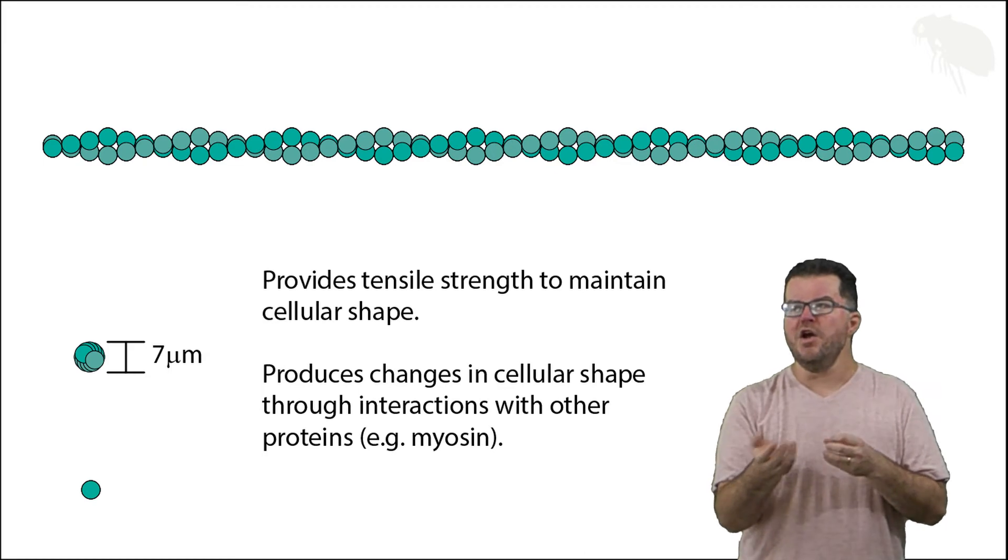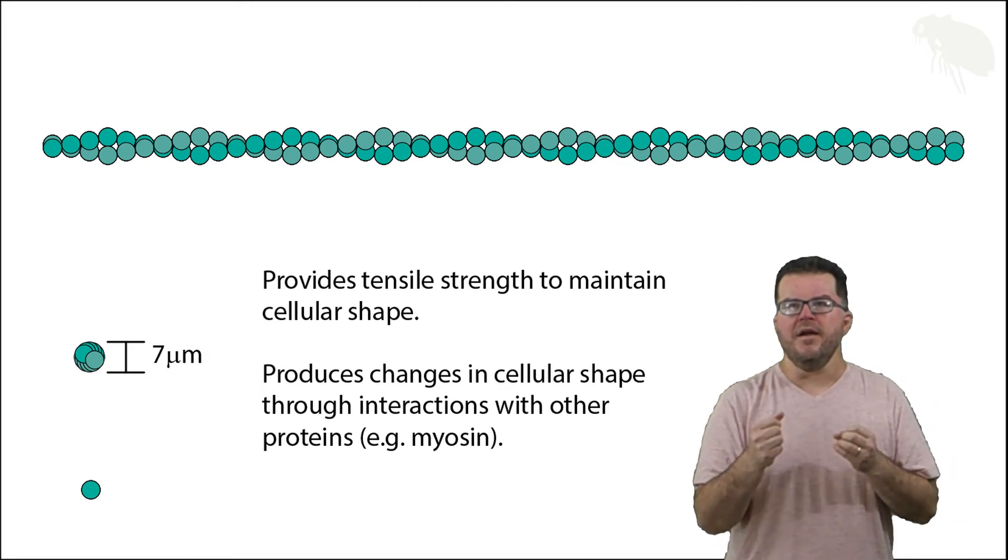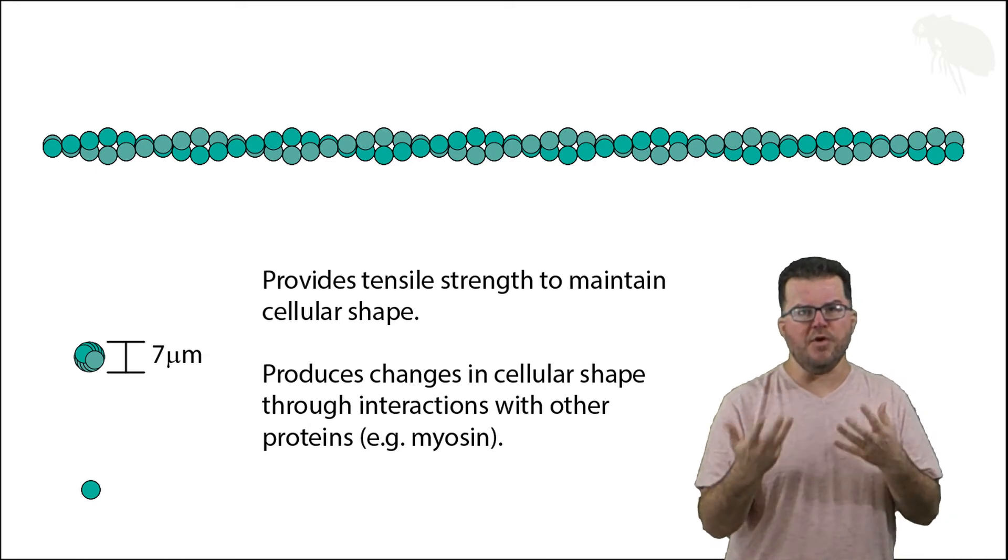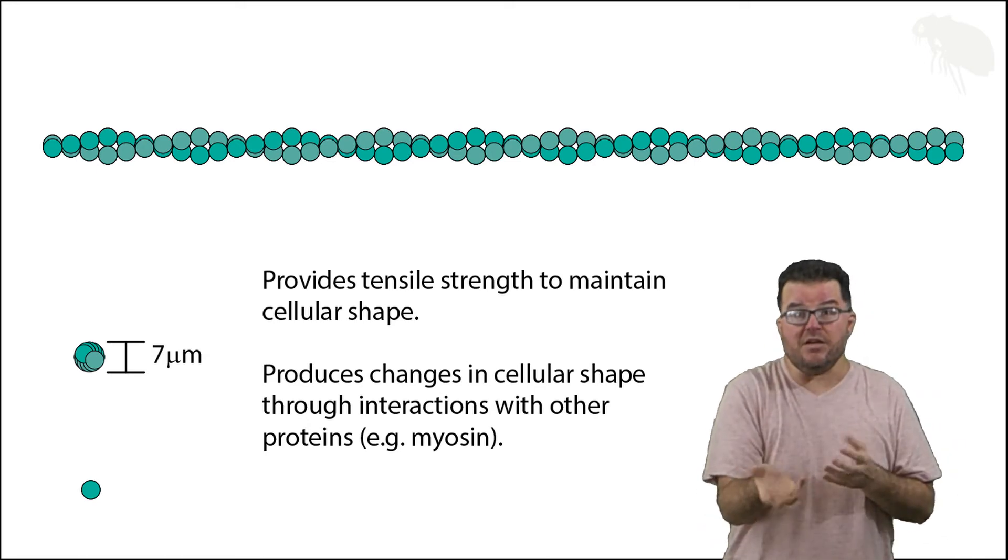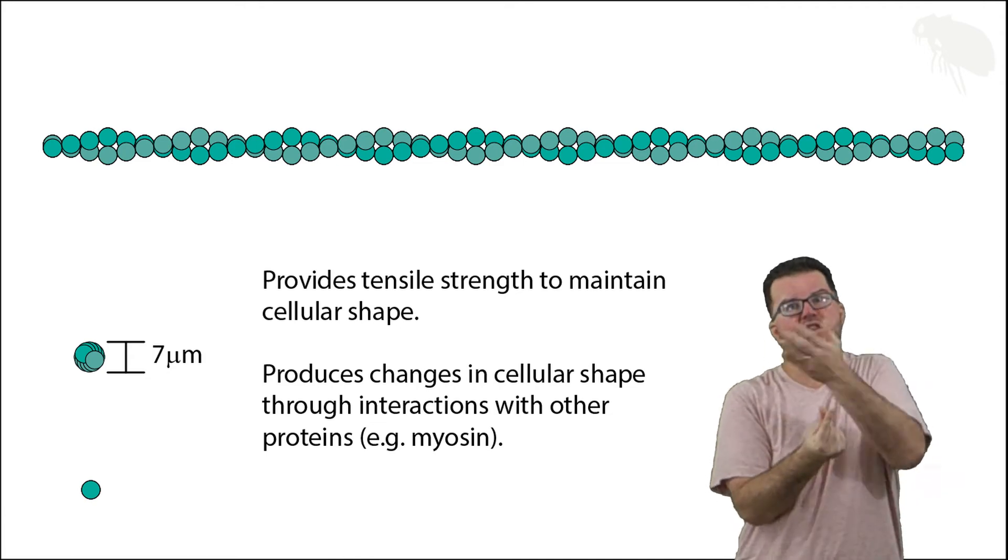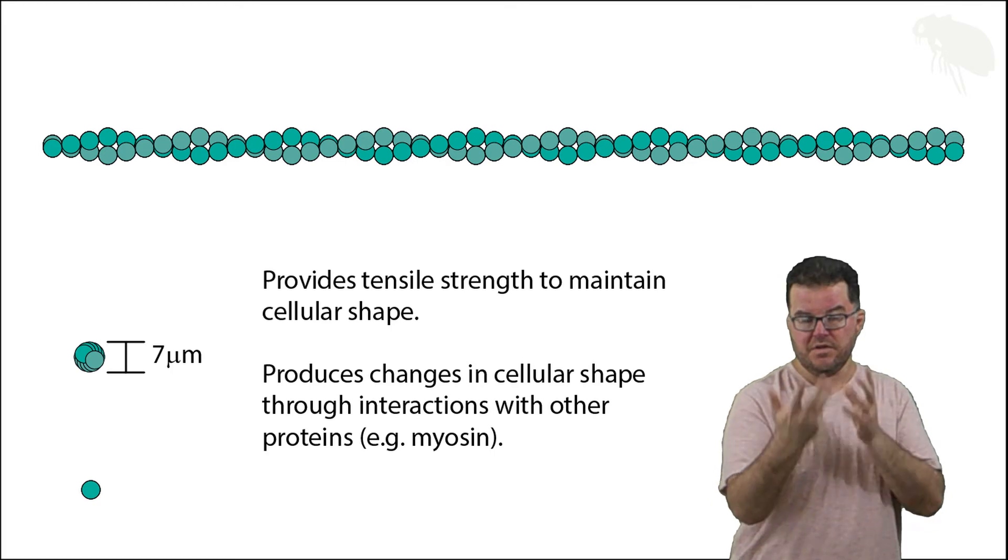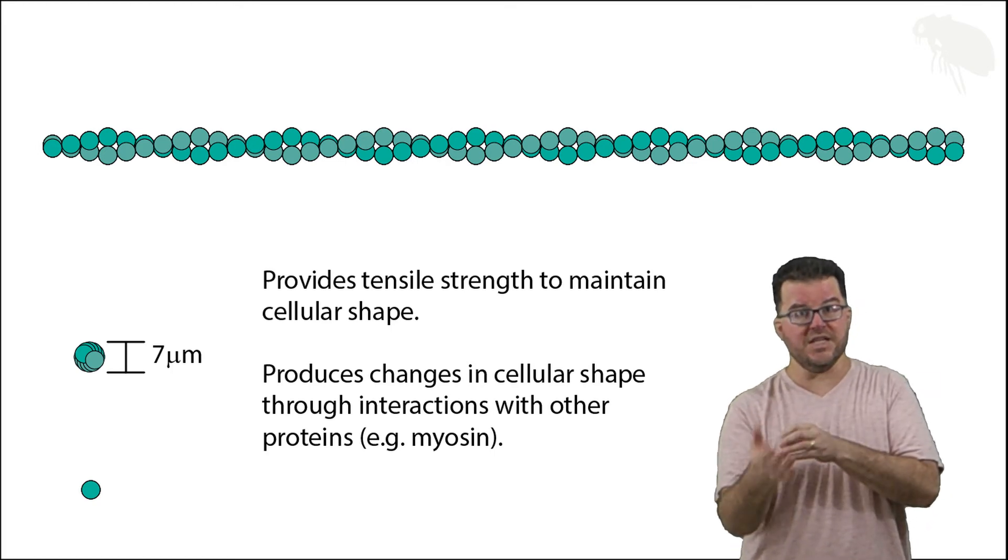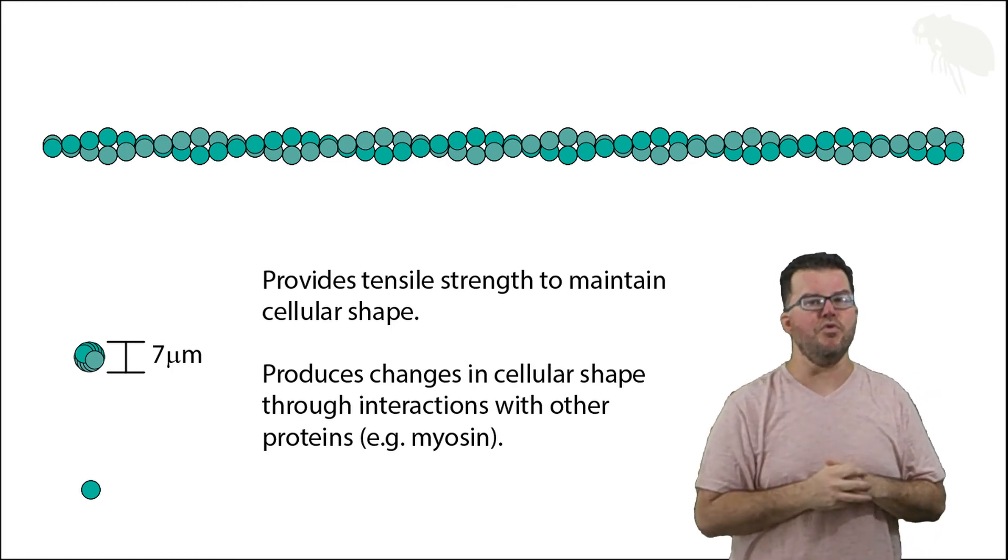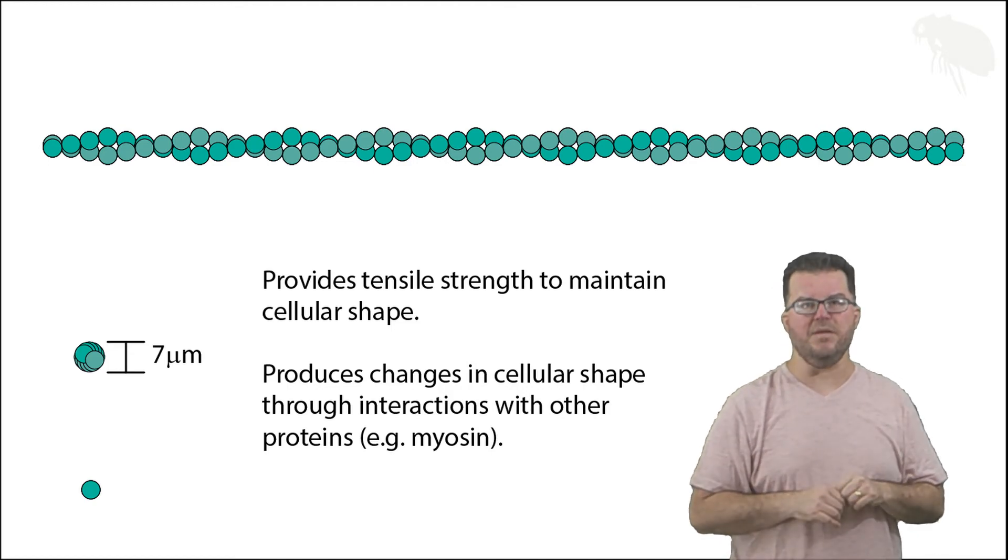When pseudopods are formed for phagocytosis or for pseudopod-based locomotion, that's being driven in large part by microfilaments. Muscle cells have a lot of microfilaments because muscle contraction is a change in the shape of the muscle cell. So microfilaments will both support stability in cell shape when pushed under stress and then also support movement and change in the cell shape. And there you have microfilaments.